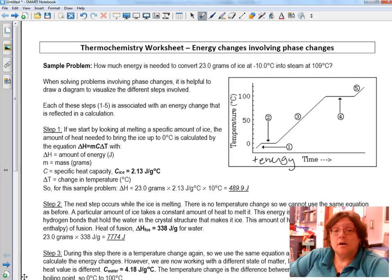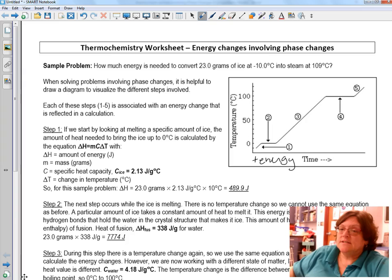Hello, friends. Today we're going to talk about the energy involved in phase changes. On your worksheet, the thermochemistry worksheet, we're going to look at what would happen if we convert 23 grams of ice into steam. So let's think about what that's going to look like. We have a graph here. It says time. Really should say energy, so make that change.